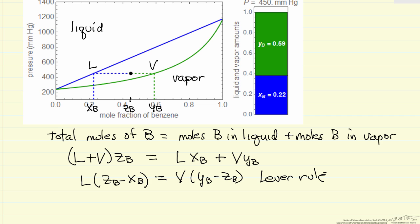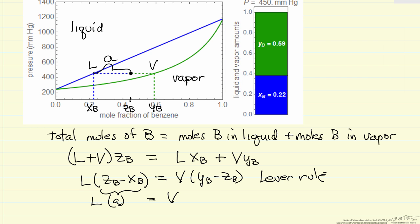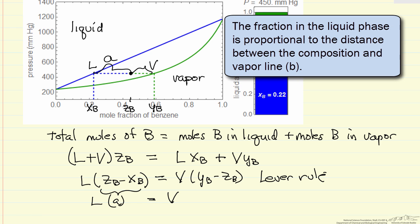What it's saying is L times this, ZB minus XB, which is that, so let me call that A. L times A is V, the amount of vapor, times B. B is YB minus ZB.